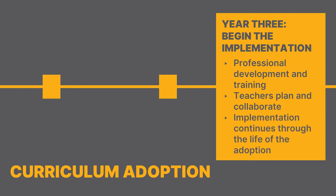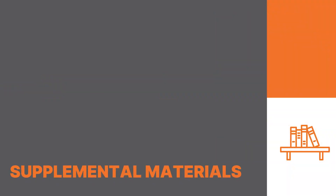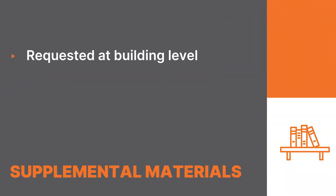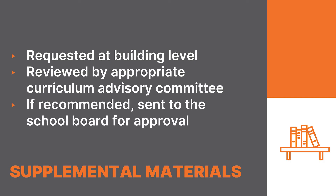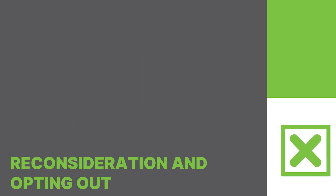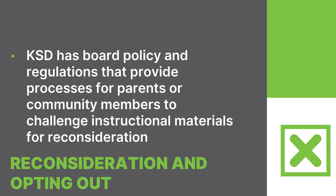Implementation is a process that continues throughout the life of the adoption. Supplemental materials, such as class novels, are requested at the building level, reviewed by the appropriate curriculum advisory committee, and, if recommended, are approved by the school board, usually as a consent agenda item. The district has board policy and regulations that provide processes for parents or community members to challenge for reconsideration instructional materials. Additionally, parents may opt their children out of curriculum resources they find personally objectionable by working with their school principal. Typically, alternative materials and assignments will be assigned so the student may still have access to learning the standards and can continue to make progress in the course of study.